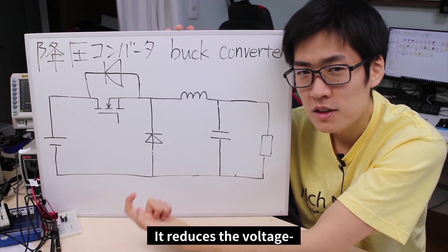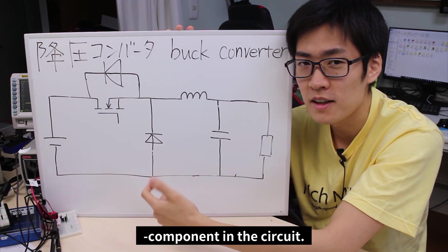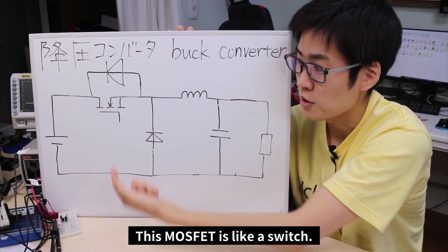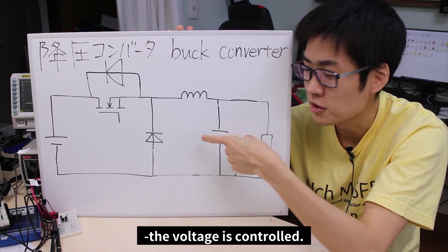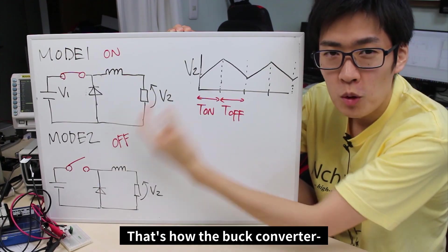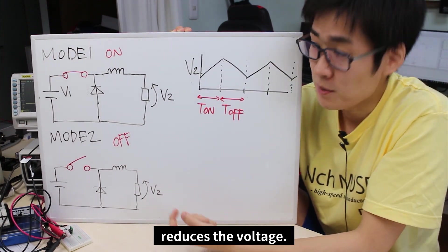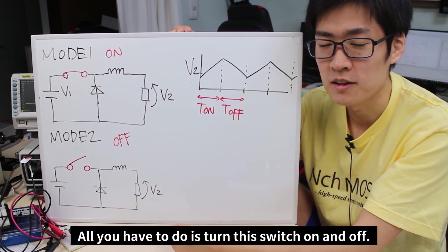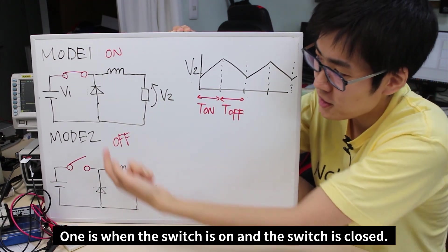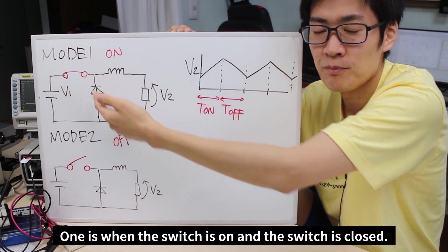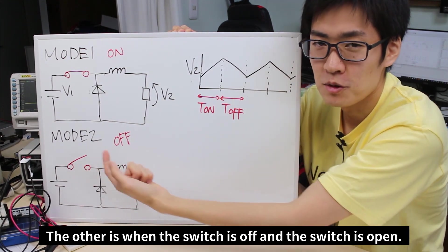These step-down converters, as the name implies, reduce the voltage. They do so by flipping the switch of the MOSFET component in the circuit. The MOSFET acts like a switch — by turning it on and off, the voltage is controlled. And that's how the buck converter reduces the voltage. It has two operations: the first is where the switch is on and closed, and the second is where the switch is off and open.